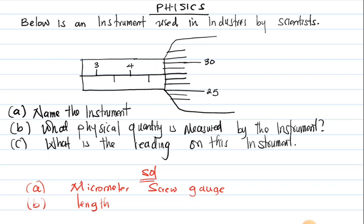Then part C says: what is the reading on this instrument? The reading on this instrument - first we need to get the reading from the sleeve, then you get from the thimble. This part that we are seeing here is what we call the sleeve. This part here is what we call the thimble.